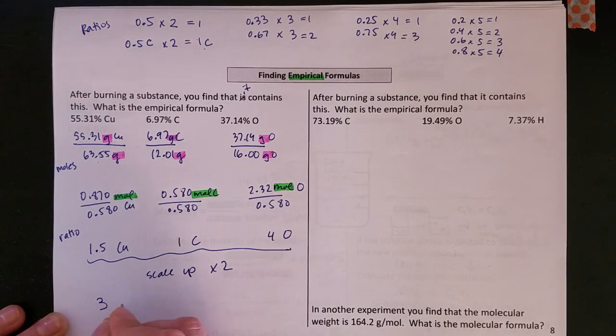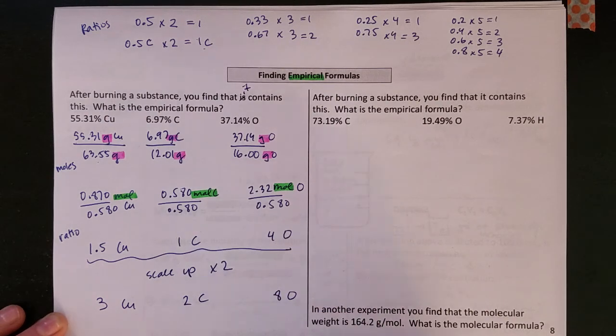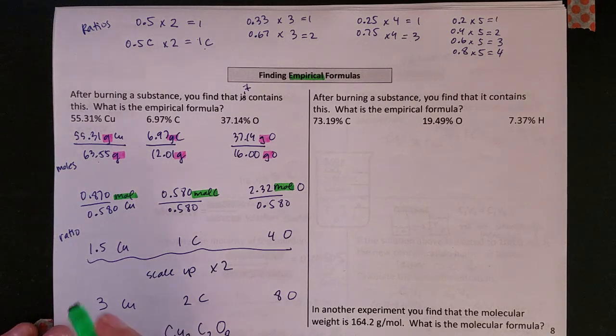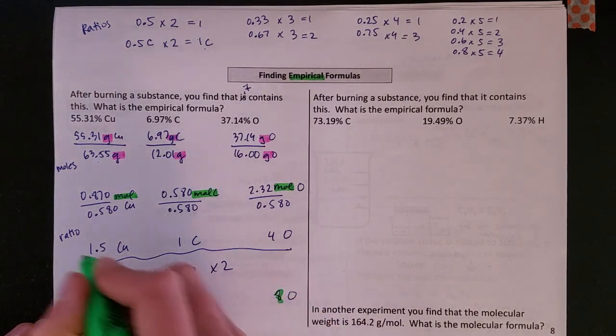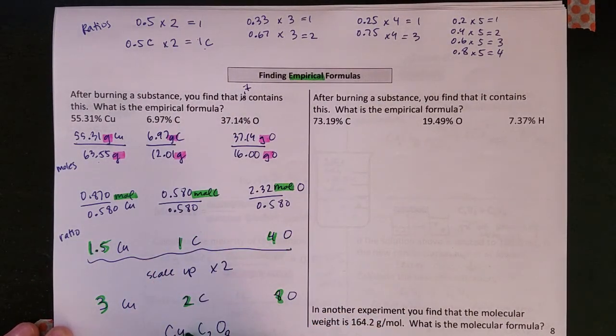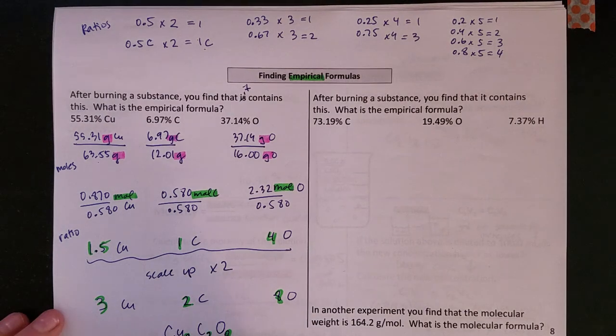So then that's going to give me 3 coppers, 2 carbons, and 8 oxygens, or a formula of Cu3C2O8. And these numbers are going to become those subscripts, right? I scaled them up and then those became the subscripts in my empirical formula. So here is the empirical formula for that problem.